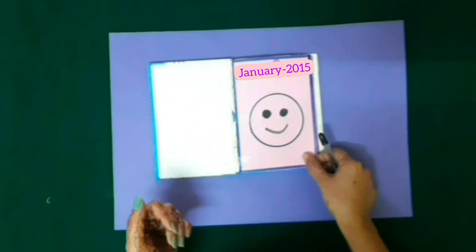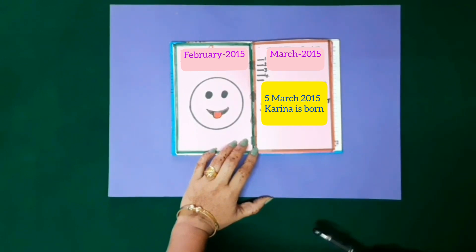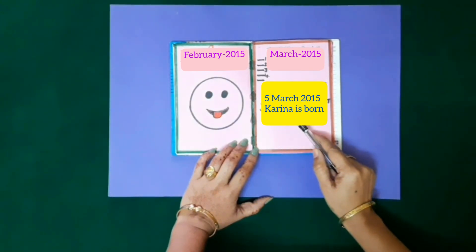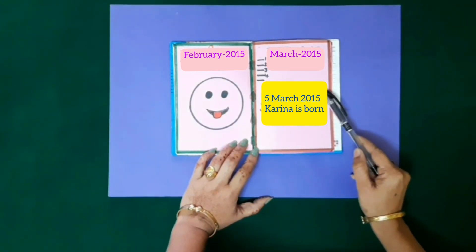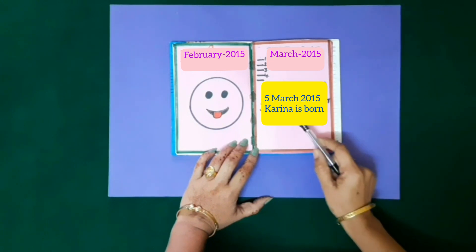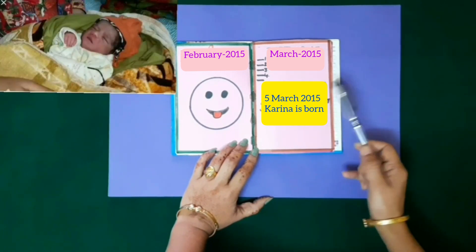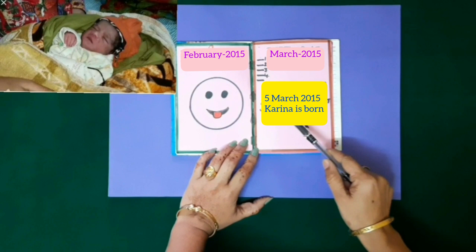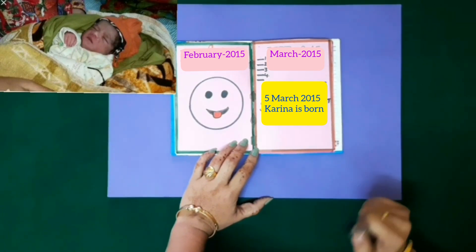Students, Rani used to write date, month and year to mark any event, like on 5th March 2015. Rani wrote in her diary that on 5th March 2015, Kareena is born.